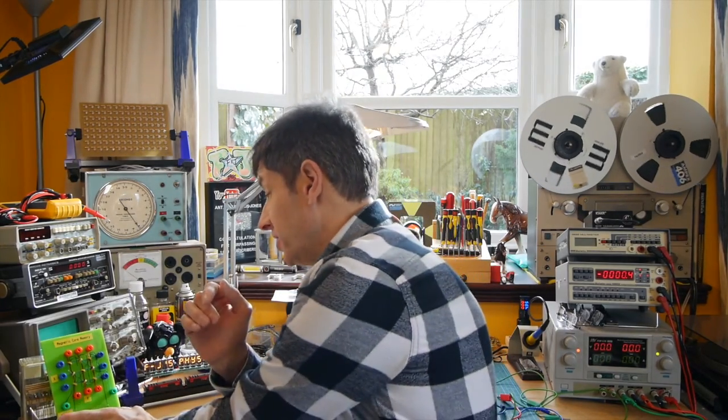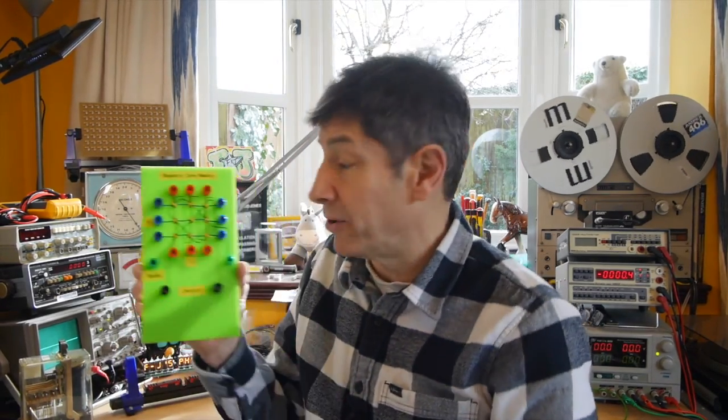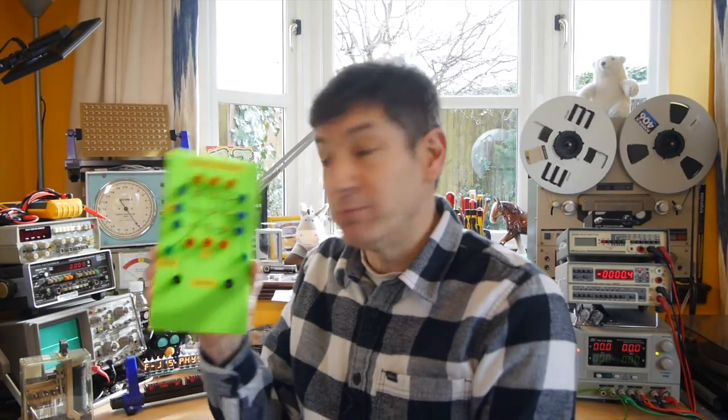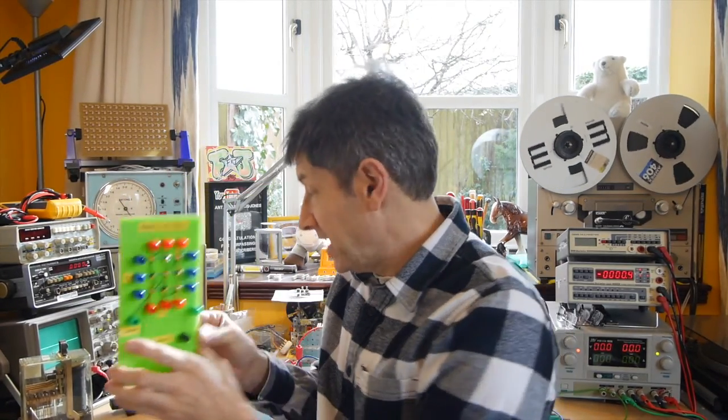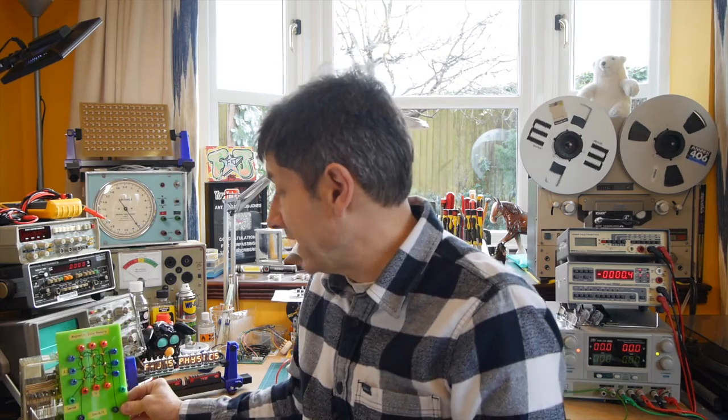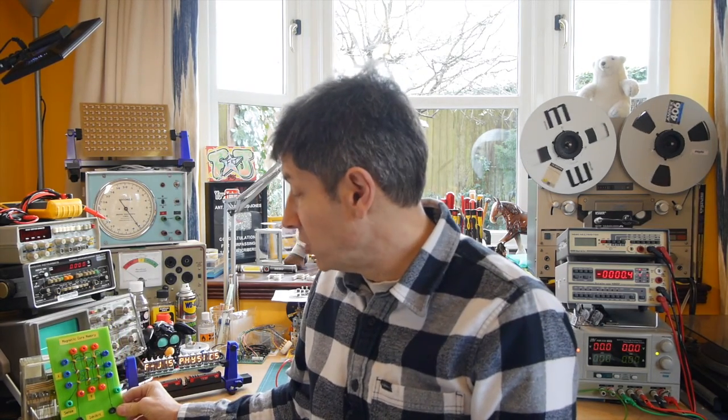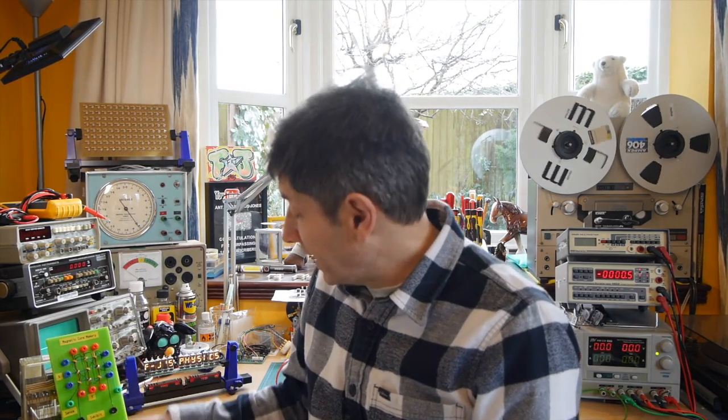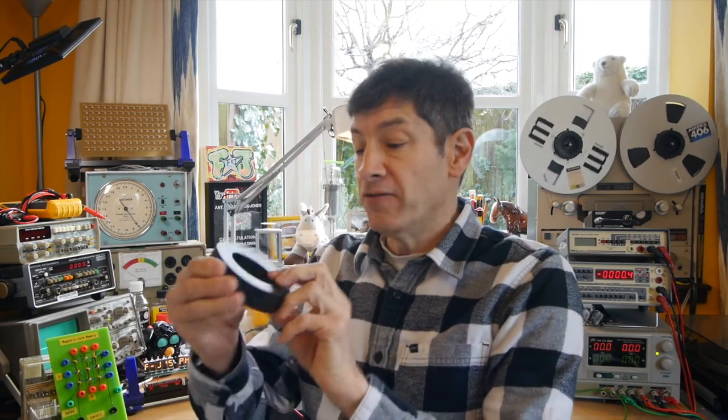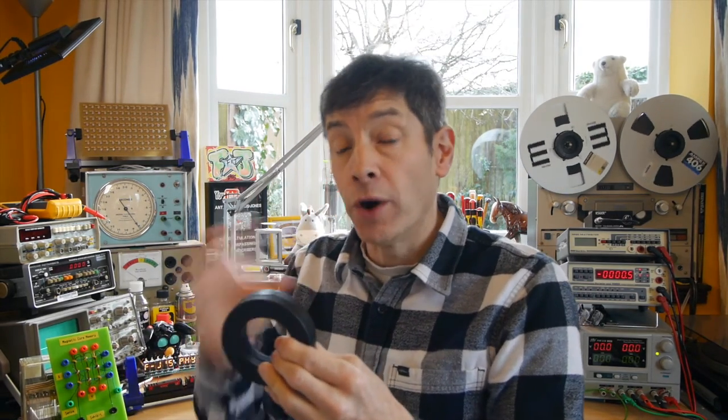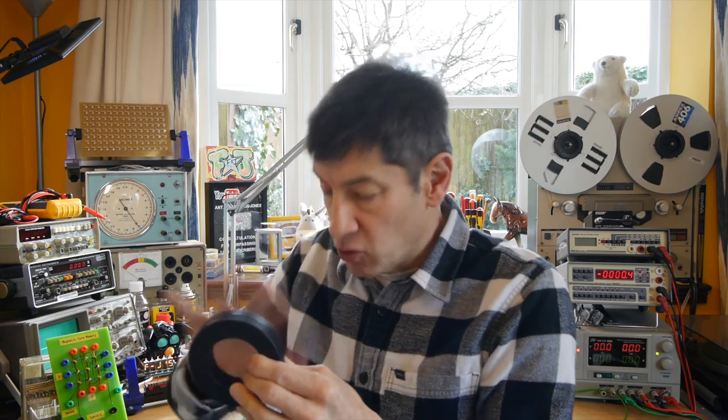So, just before we have a closer look at this little bit of core memory I've made with nine bits of data storage on it, perhaps a really quick recap on how this kind of memory works. It consists normally of thousands and thousands of ferrite toroidal cores, and if you remember you can magnetize these in one of two directions.